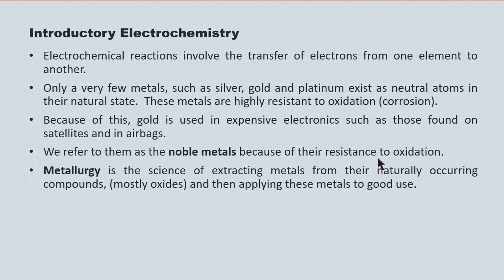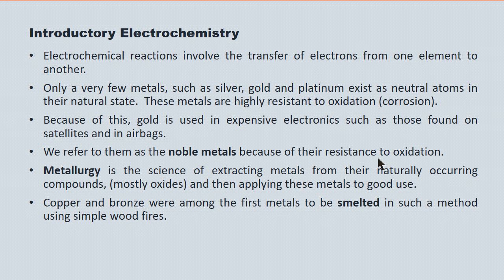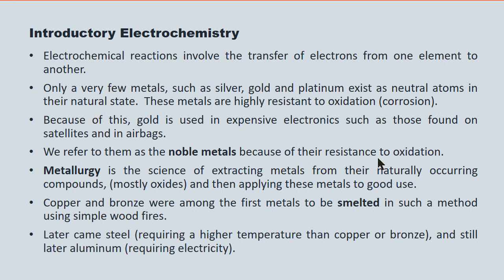Metallurgy is the general science of extracting metals from their naturally occurring compounds — which are mostly the oxides — and then applying these metals to other purposes. Copper and bronze were among the first metals to be smelted using simple wood fires. Smelting is the process of reducing a metal back to its atomic state from its ionic form. Later, iron and steel were smelted using higher temperatures, and still later aluminum required the application of electric current.